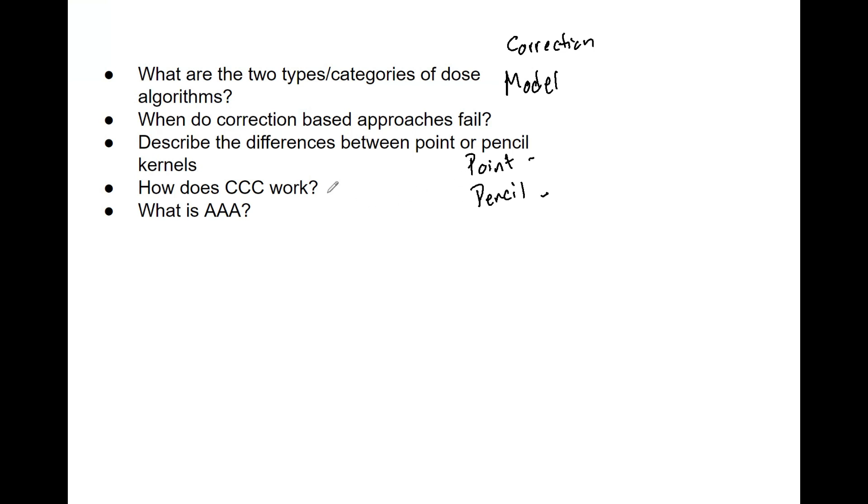Now collapsed cone convolution, CCC, ignores multiple scattering events—that speeds up the calculation. Remember, this isn't as accurate as Monte Carlo, but Monte Carlo takes a very long time and probably in most cases isn't clinically viable because it takes so long.